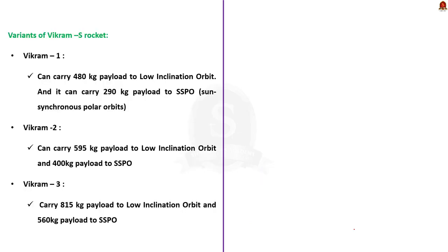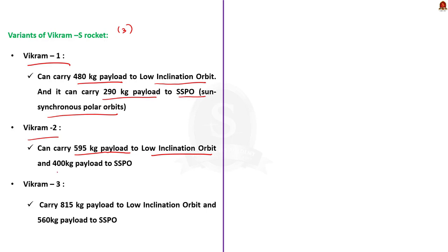Skyroot has been developing three variants of the Vikram rocket. Vikram-1 can carry 480 kg of payload to low inclination orbit and 290 kg to sun-synchronous polar orbits. Vikram-2 can carry 595 kg to low inclination orbit and 400 kg to sun-synchronous polar orbits. Vikram-3 can carry 815 kg to low inclination orbit and 560 kg to sun-synchronous polar orbits.